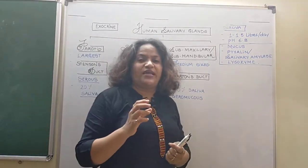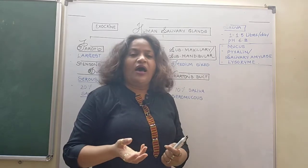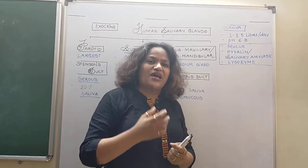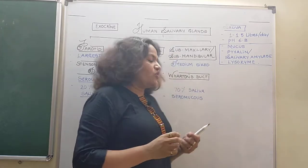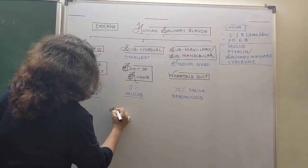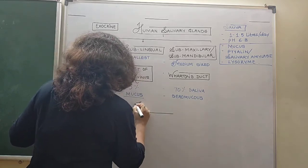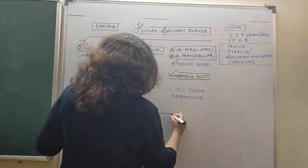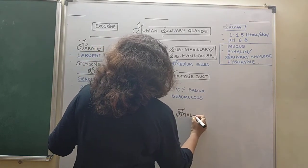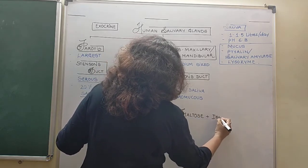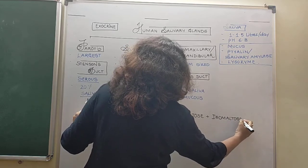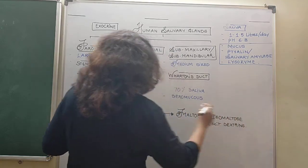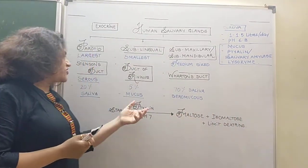Saliva contains ptyalin, that is salivary amylase. Amylases are enzymes which work on carbohydrates, mainly starch — starch forms a very important part of our diet. Salivary amylase acts on starch generally at a pH of almost seven and breaks it down to form maltose, isomaltose, and at times also limit dextrins.